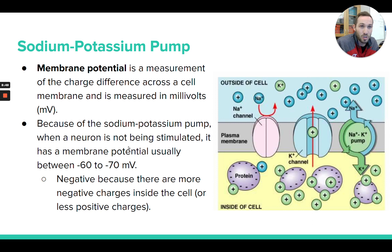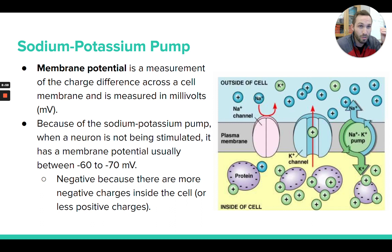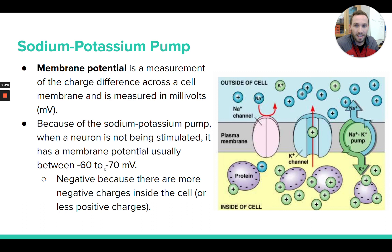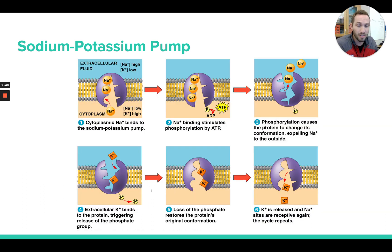For example, neurons — your nerve cells, even the neurons in your brain — have thousands and thousands of sodium-potassium pumps in each nerve cell. Because of that, the membrane potential is measured as negative 60 to negative 70 millivolts in a resting nerve cell. The reason it's negative is because we're measuring the charge of the inside of the cell relative to the outside, and the inside is more negative or less positive than outside the cell — that's active transport because it requires ATP and we're moving substances against their concentration gradient.